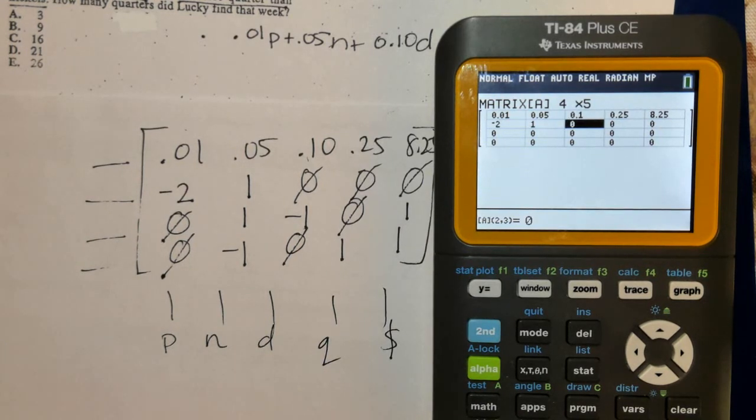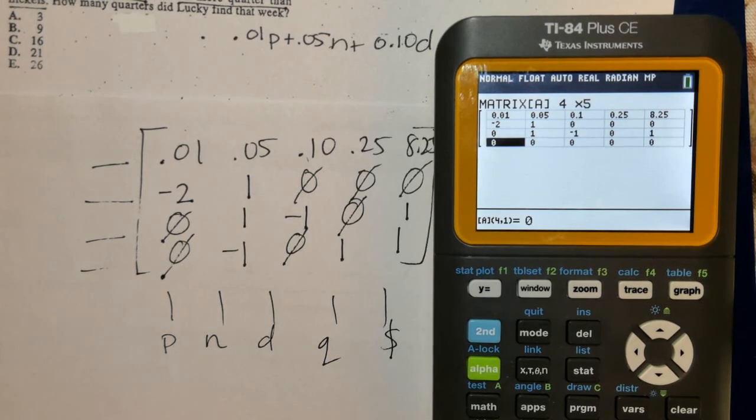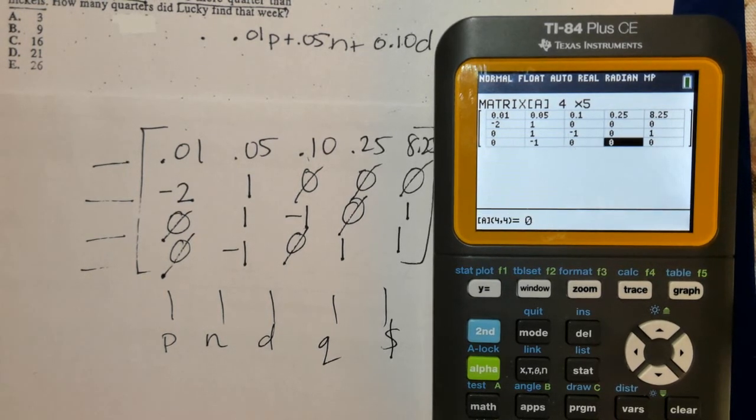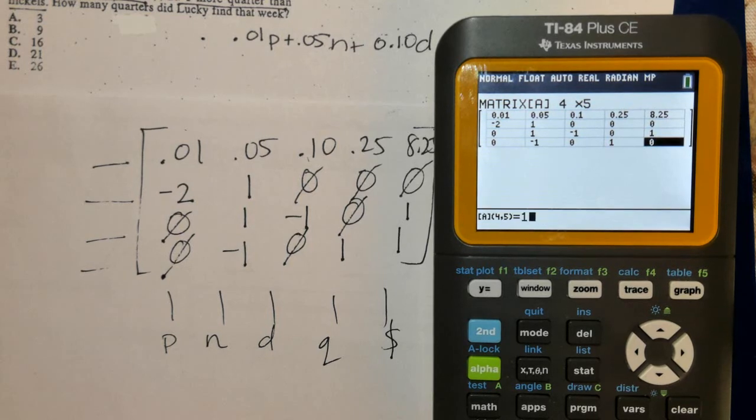Negative 2, 1, 0, 0, 0. Then 0, 1, negative 1, 0, 1. Then 0, negative 1, 0, 1, and 1.